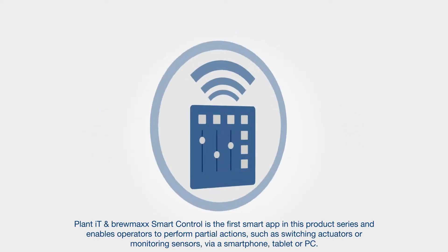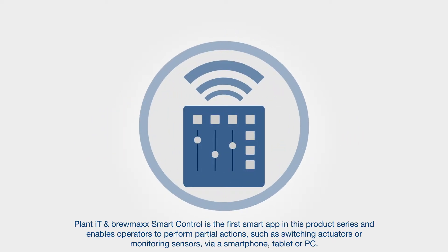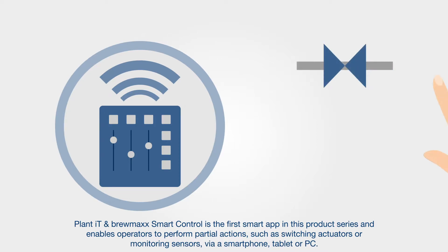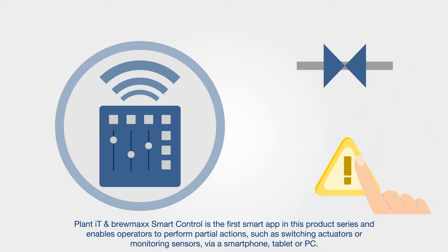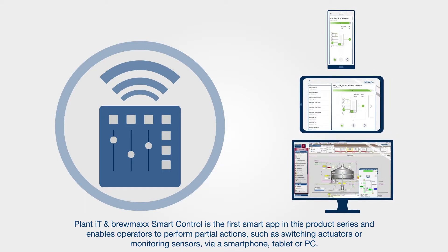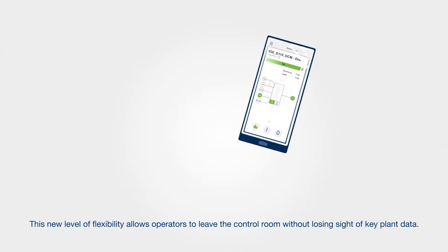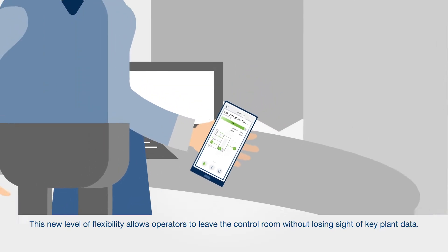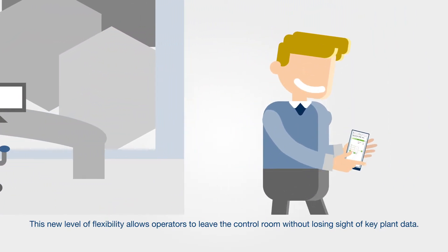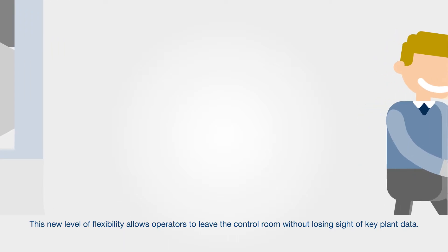Plant IT and Brumac smart control is the first smart app in this product series that enables operators to perform partial actions such as switching actuators or monitoring sensors via a smartphone, tablet, or PC. This new level of flexibility allows operators to leave the control room without losing sight of key plant data.